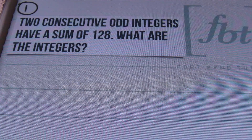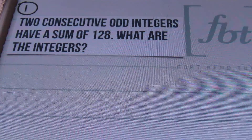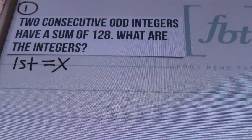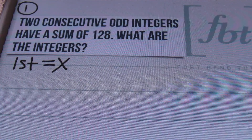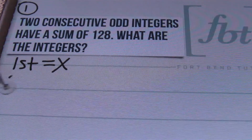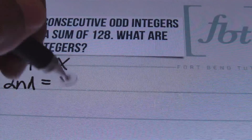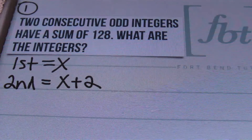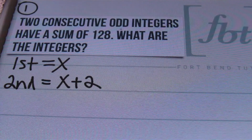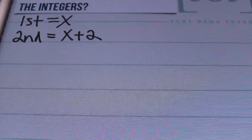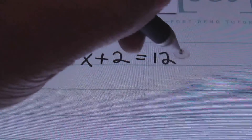We'll start by defining our numbers. We have two consecutive odd integers, so we have two numbers to define. Since we don't have any information about the first number, we'll label it X — just the variable X, our unknown. The second number, being an odd integer, has to be two places away from the first. Consecutive odd numbers must fall right behind one another, so the second odd number is definitely going to be two places away. The first number is X, and the second number is X plus 2. Since the sum of these two consecutive odd integers is 128, we write the equation: X plus (X plus 2) equals 128.